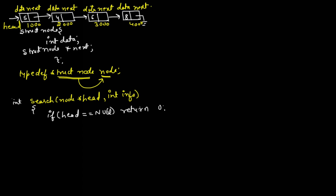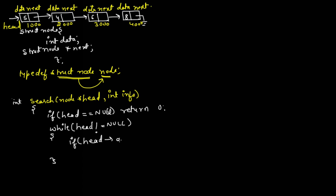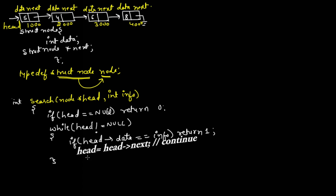If the linked list is not empty and there is at least one node, we can search. We use while head is not null, and inside the loop, if head->data is equal to info, that means the data is found and we return 1. After the while loop ends without finding the data, we return 0.